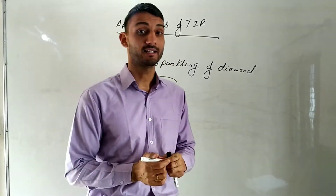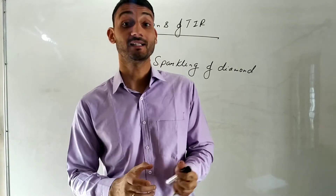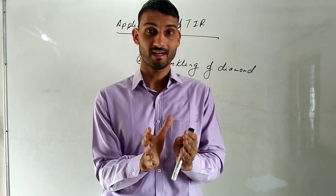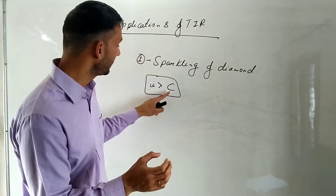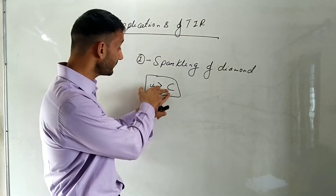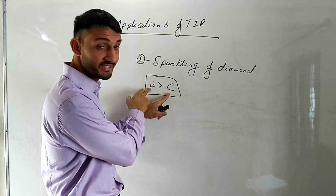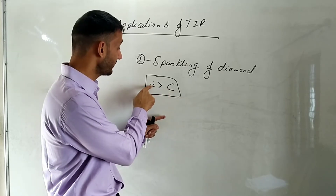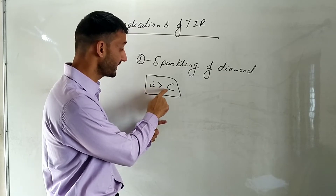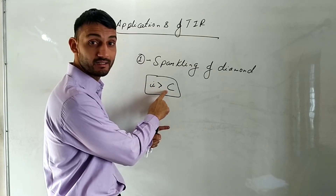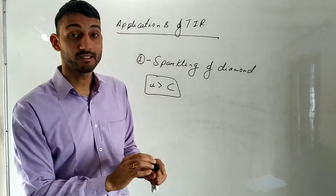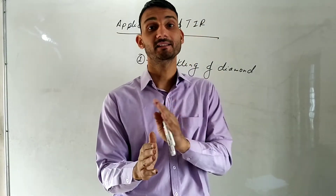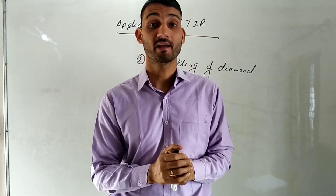When light enters inside the diamond, the edges of the diamond are cut at such an angle that when light strikes those edges, the angle of incidence is always kept greater than the critical angle. So the light does not come out but keeps on reflecting inside the diamond, and this is how the diamond sparkles.